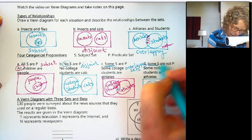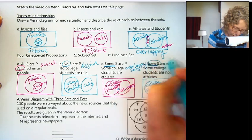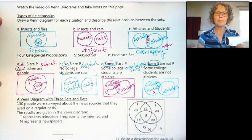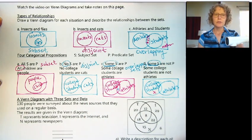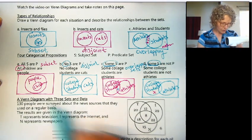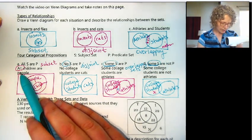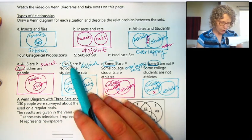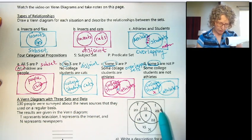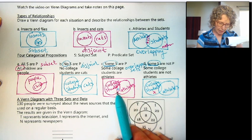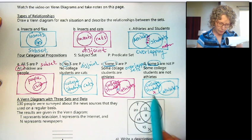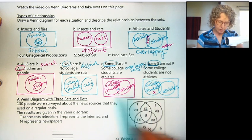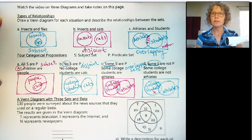So 'some' is a keyword indicating overlapping sets. You can use those keywords: 'all' is a keyword for subset, 'no' is disjoint, and 'some' is overlapping. Whichever situation you have, you want to indicate where that goes.